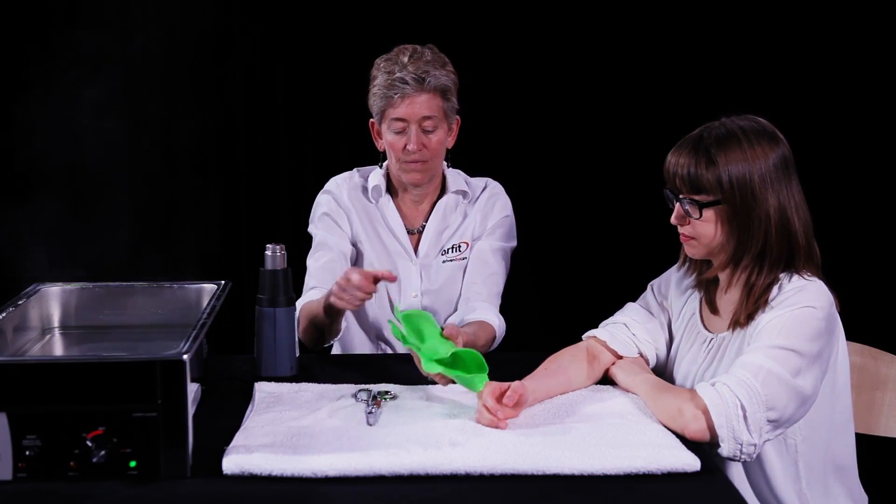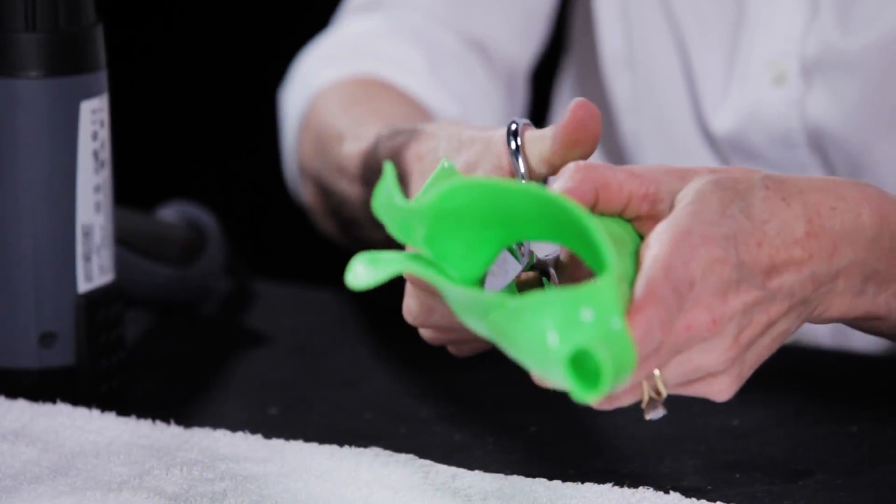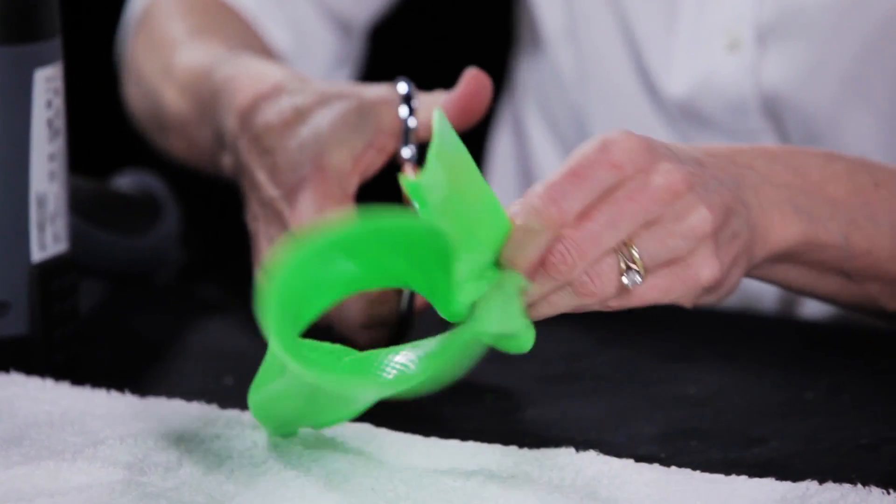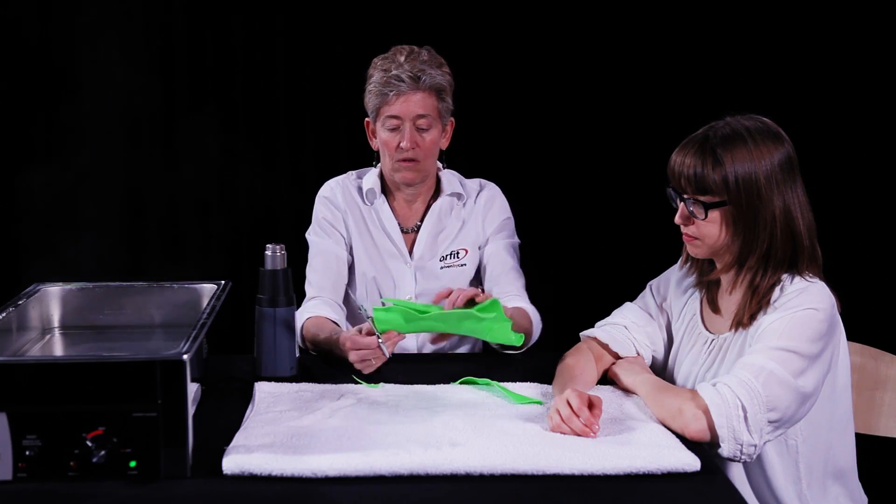Trim away the pinched areas, rounding all corners and leaving a nice smooth edge. Make sure the thermoplastic material does not overlap over the patient's forearm as this will cause pinching of the skin.